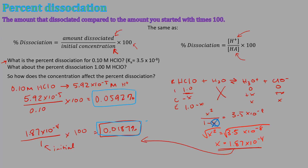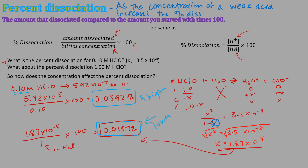What does this tell us? The percent dissociation is lower for the higher concentration, even though the absolute amount of dissociation is larger. As the concentration of a weak acid increases, the percent dissociation decreases. That's because weak acids can't produce much hydrogen ion, and as the denominator grows larger the percentage falls. Eventually with practice you won't even need to write out ICE tables — you'll plug directly into the Ka expression.